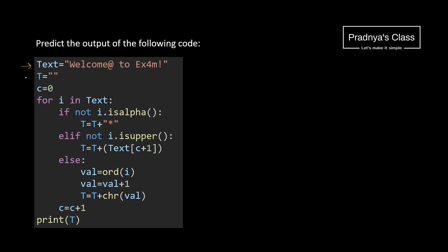Here is one string with some value, and there is one more string that is empty. C is initialized to zero. Using a for loop, we are iterating over the string — meaning I will be iterating over the individual characters. Using if-elif, there are total three conditions. When the character is not an alphabet, then star will get concatenated to the previous string. If the character is not uppercase, then we add 1 to C, and based on that index value, we pick the character to concatenate.